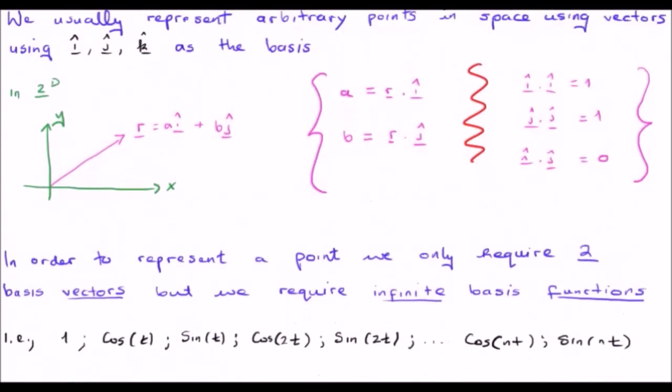Now, the thing here is that in order to represent a single point in space, in, say, 2D space, we only require two basis vectors. However, we require an infinite number of basis functions.